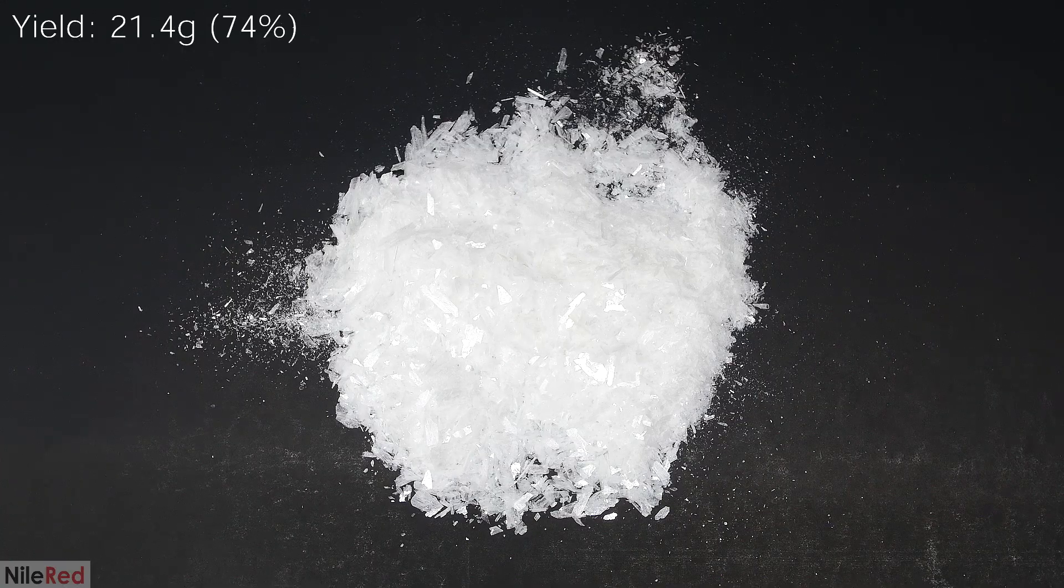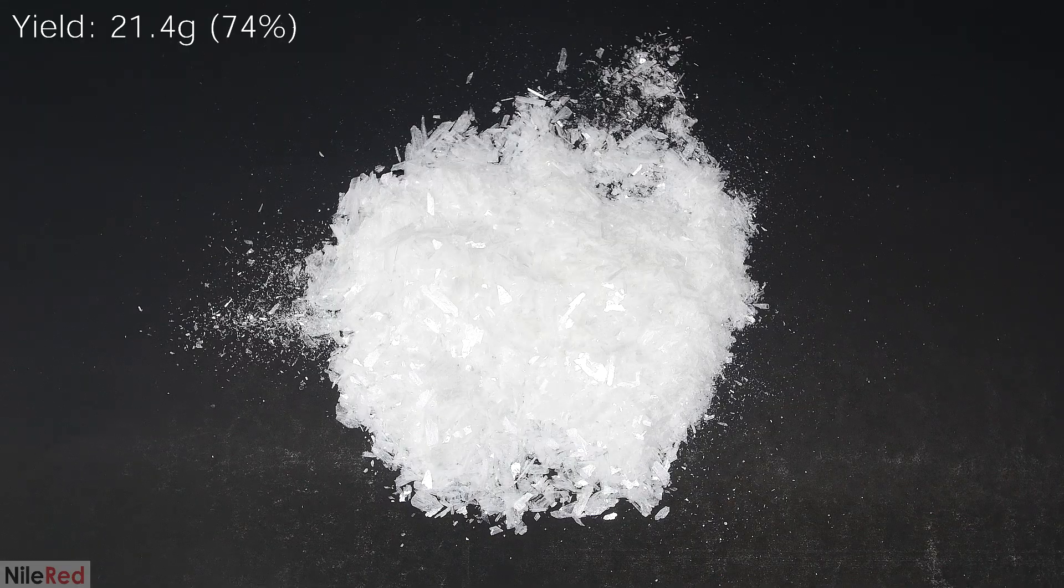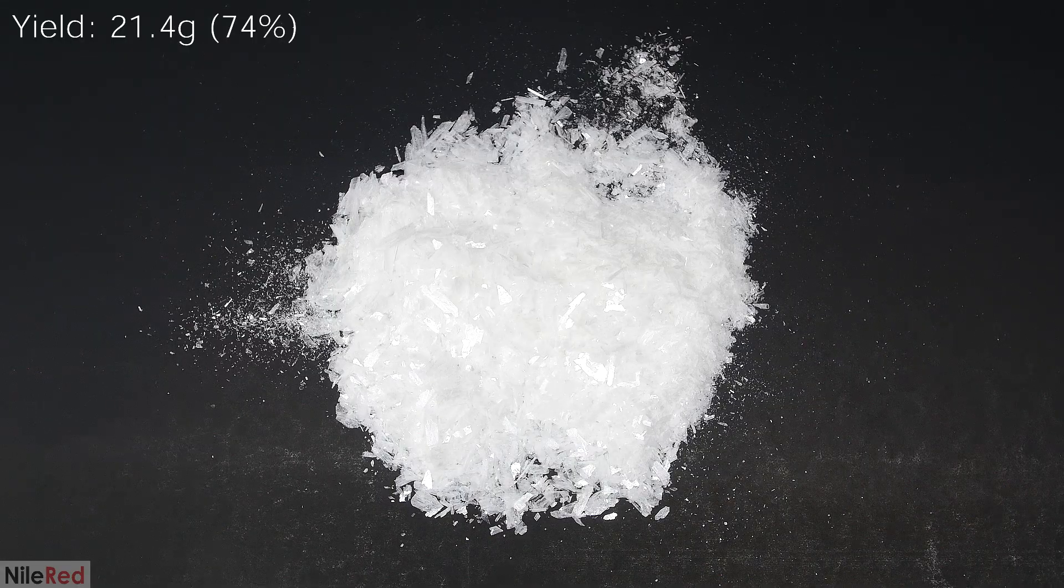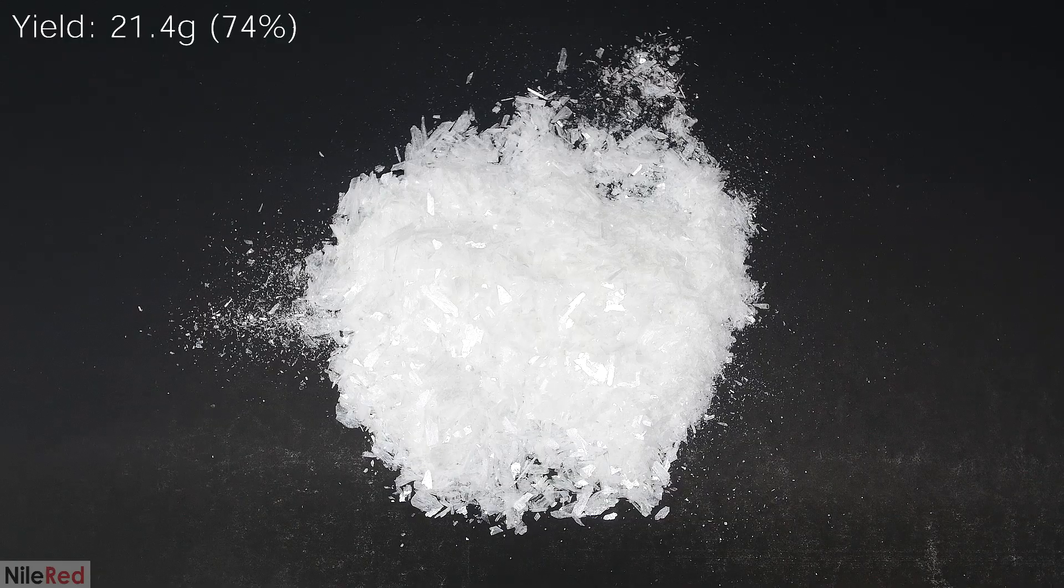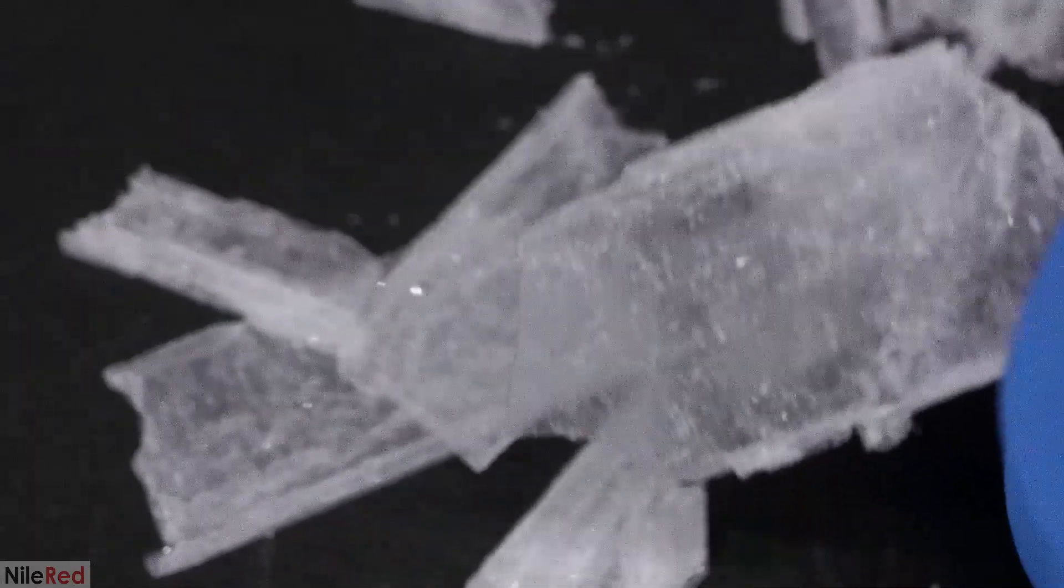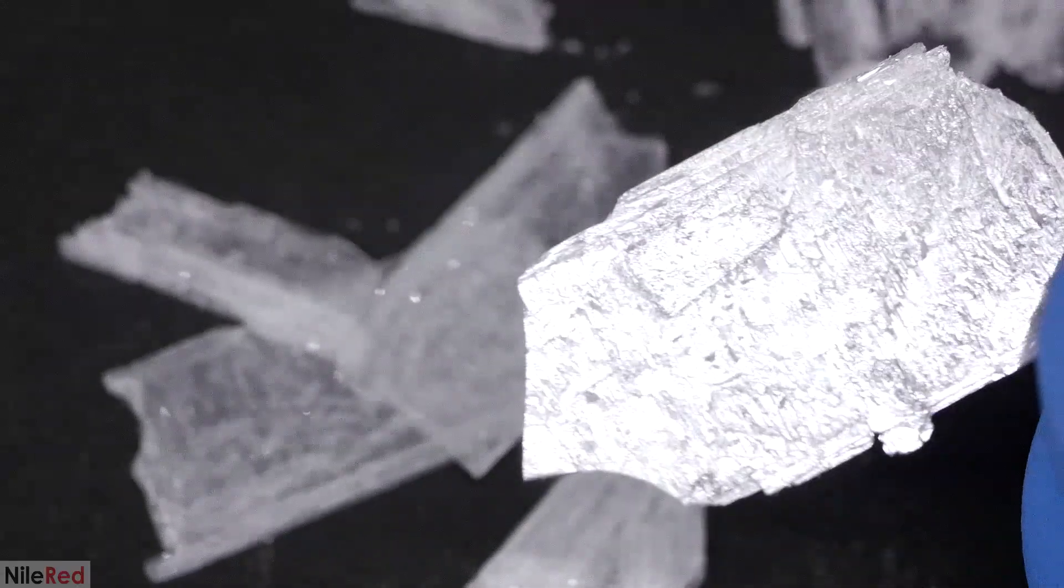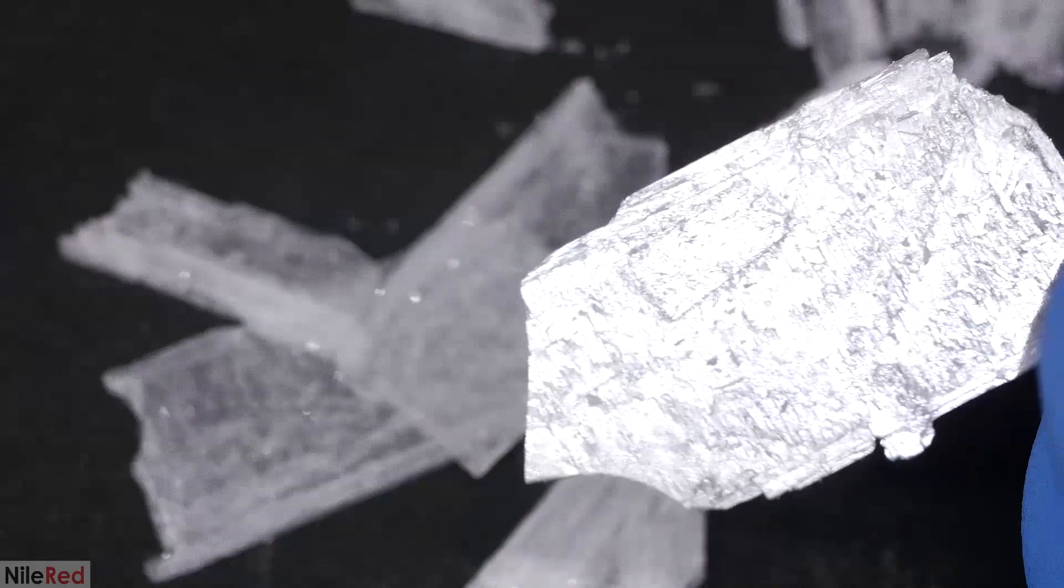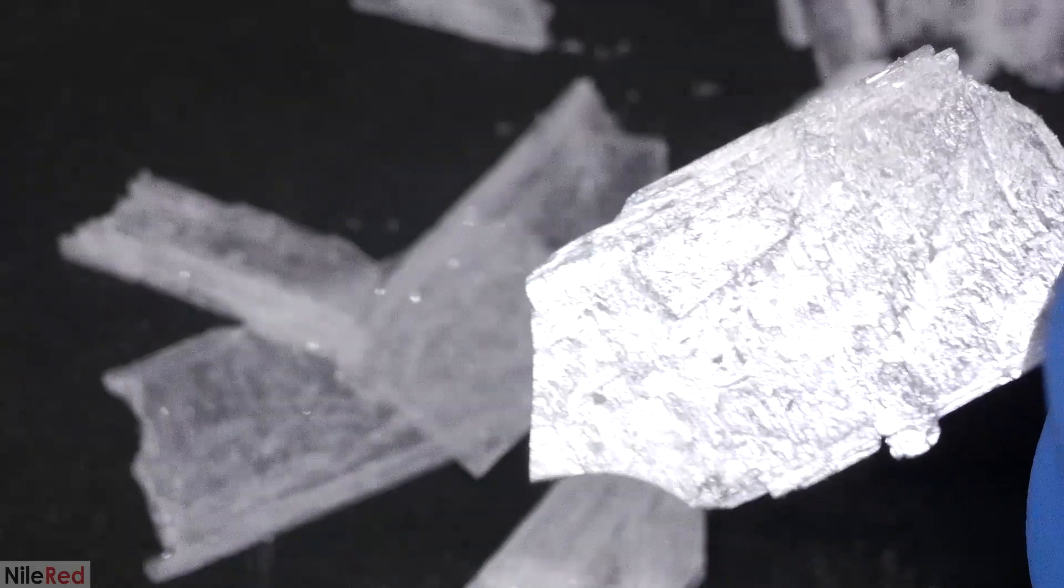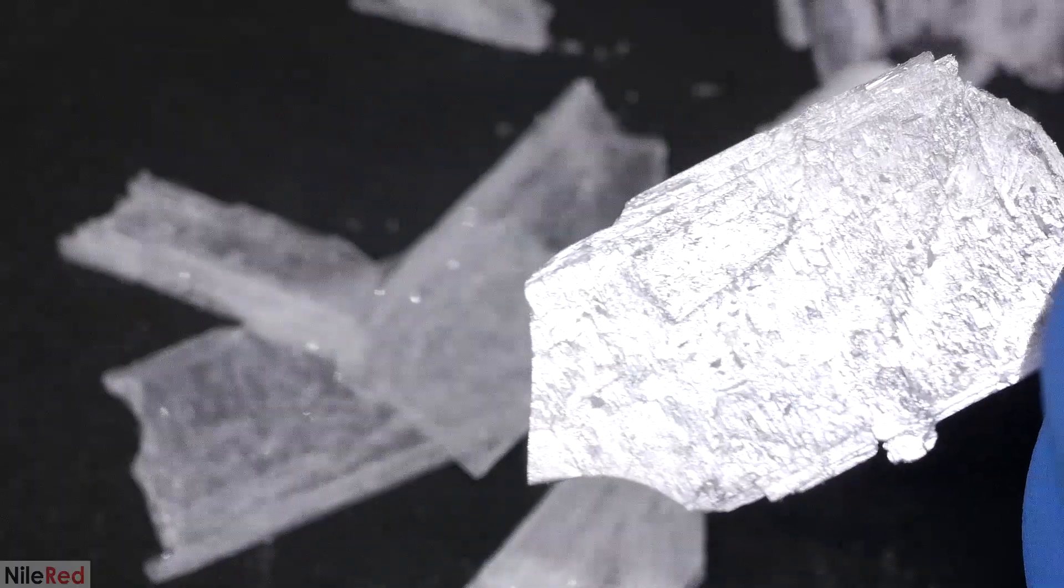The final yield of nice acetanilide crystals is 21.4 grams, which corresponds to a percent yield of 74%. I picked out some of the nice crystals and zoomed in as much as I could. When it's tilted on the side and I'm able to catch the light, we can see the surface texture of the crystal. I honestly don't have too much to say about this, I just thought the close-up was kind of cool.